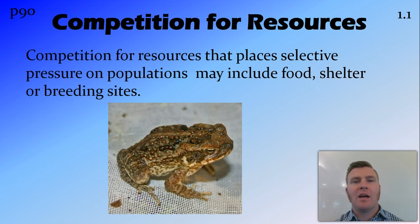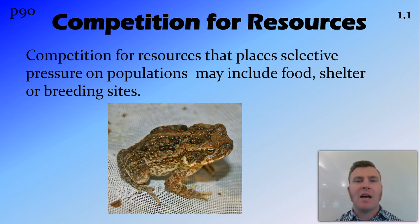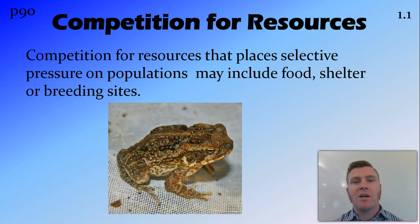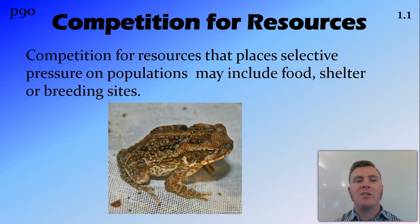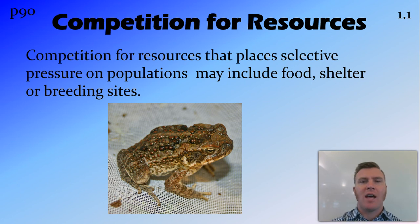The last selective pressure we're going to talk about is competition for resources. This places pressure on populations and isn't limited to food. There are other resources that are very important for populations, for example shelter, as well as access to breeding sites for animals which are particular about where they breed.